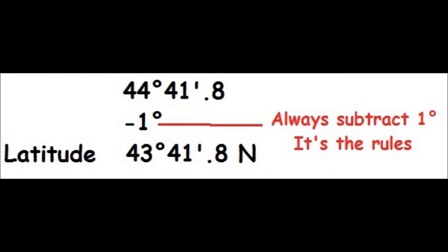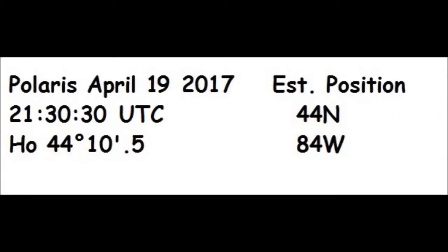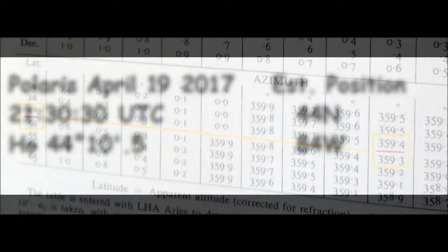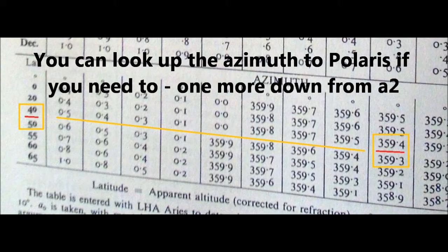After I worked all of this out, I realized that at the time and latitude and longitude I chose, Polaris would not be visible — but the procedure is still the same. I hope this is helpful. Let me know if I made any errors or mistakes; I'd appreciate hearing from you. Thanks for watching, and please like or subscribe if you are so inclined.